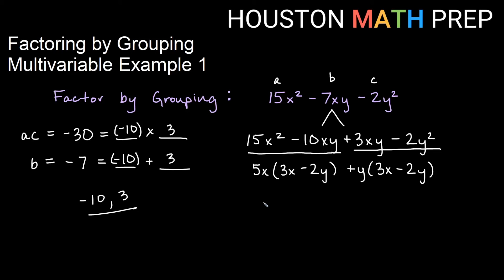And now we write our answer. Our inside factor, 3x minus 2y is part of the answer. Our outside terms, 5x plus y, are our other factor. This is using factoring by grouping to factor a trinomial with more than one variable.